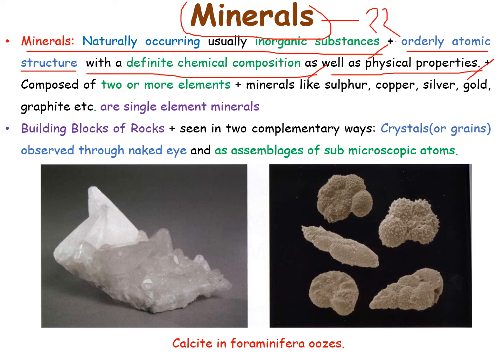So what does mineral mean? It is a naturally occurring substance. Second point, it is an inorganic substance. Third point, it has an orderly atomic structure. Then it has a definite chemical composition as well as physical property.